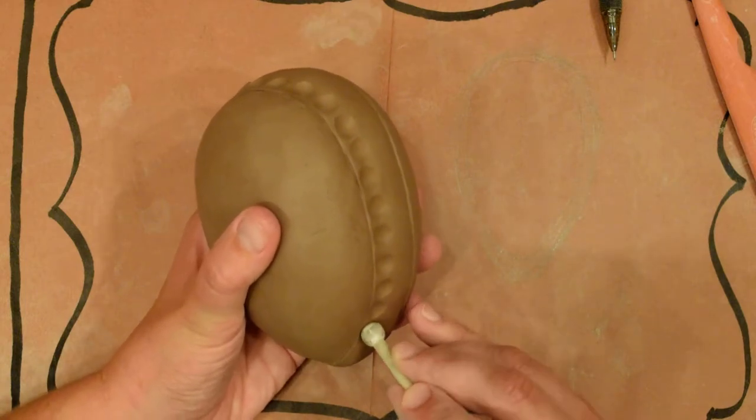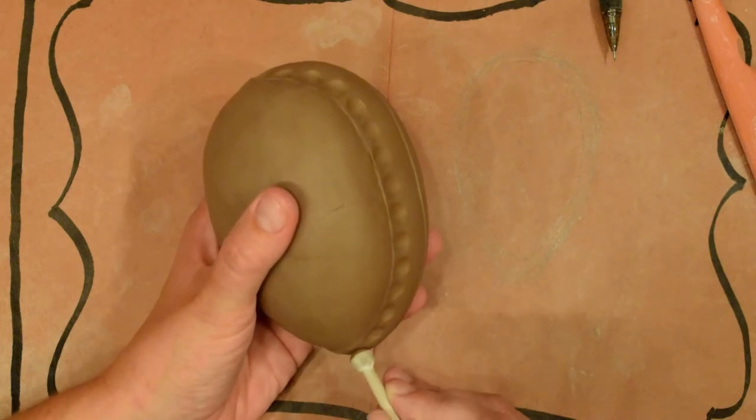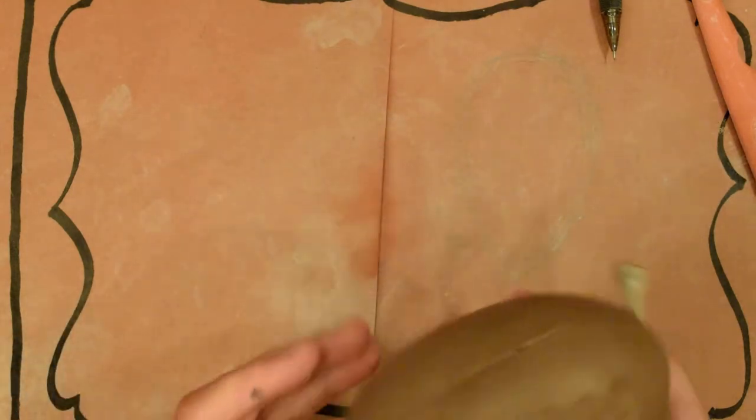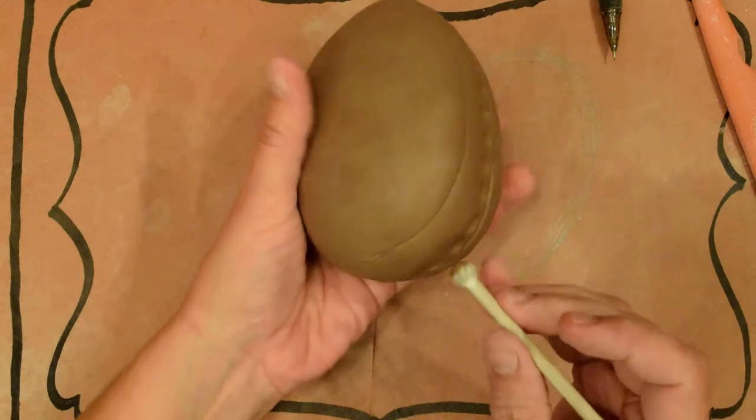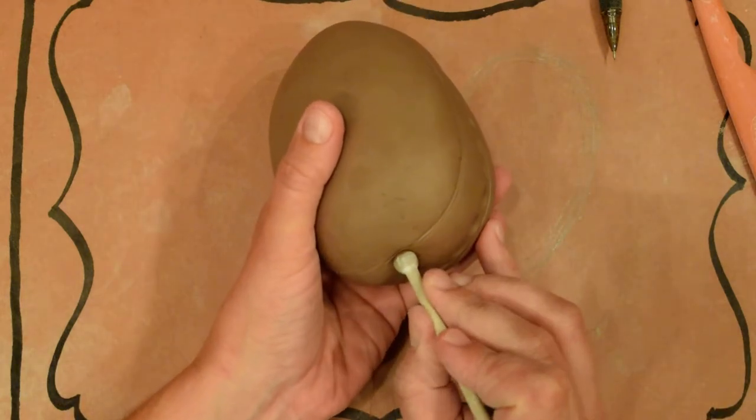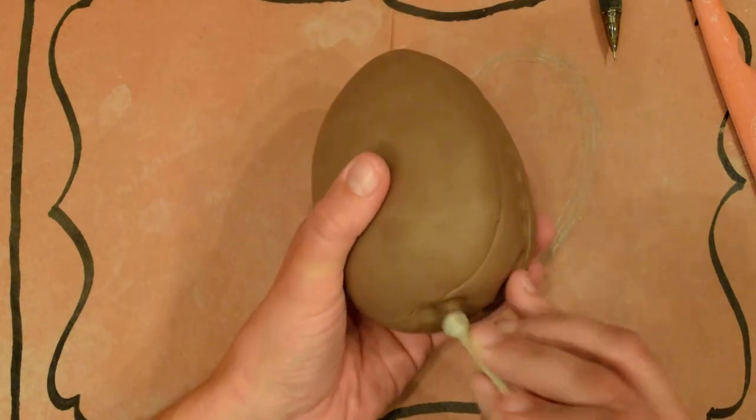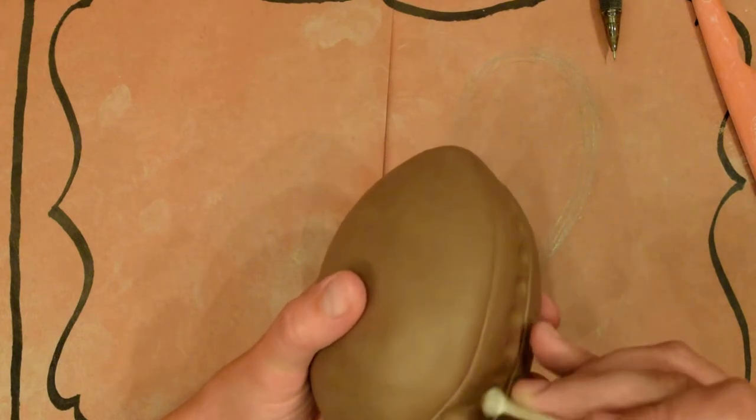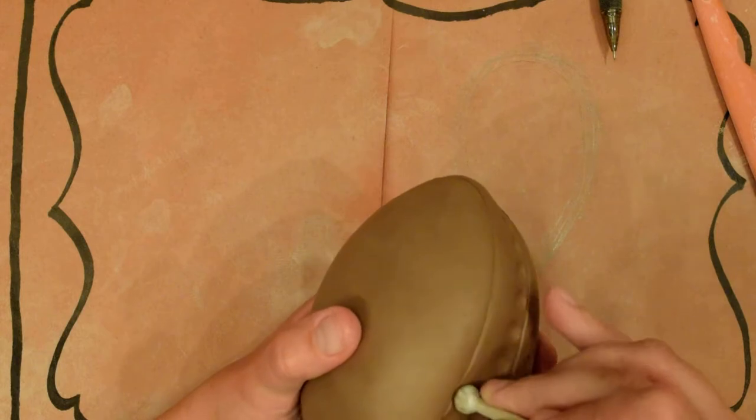You can get texture from a lot of different places, so just start looking around and seeing what's available to you. This is beginning to kind of look like an acorn, which I don't know if I'm really into, but we'll see once I get this other row of circles on there.